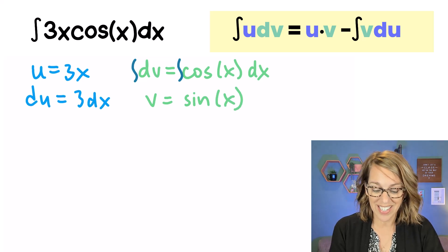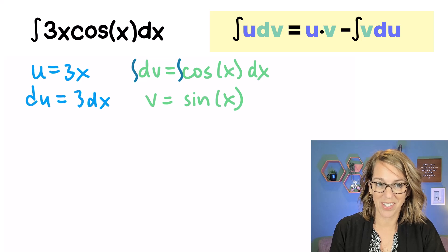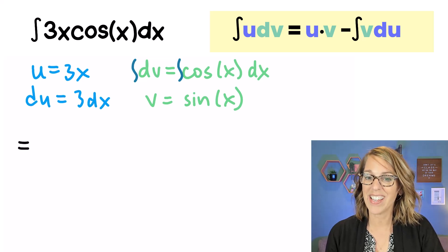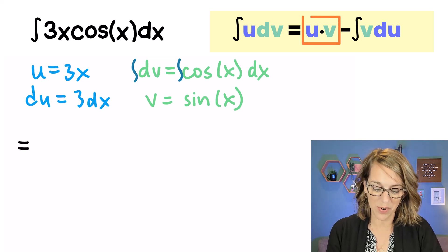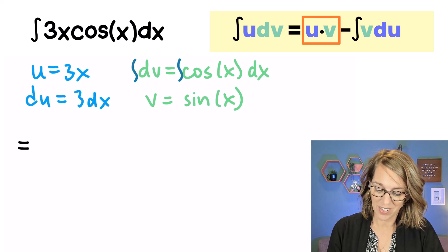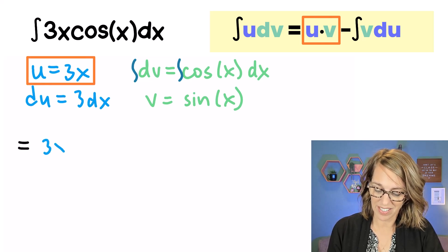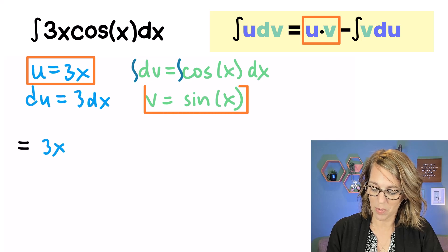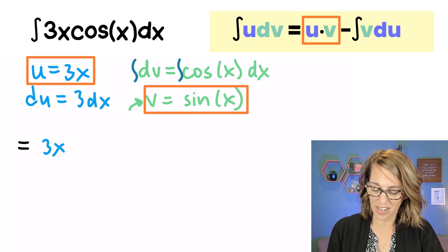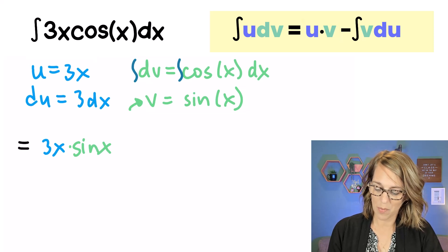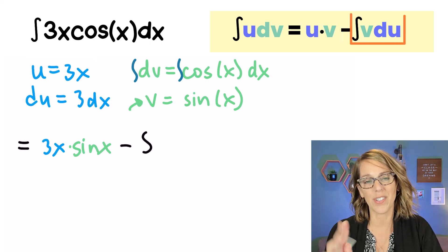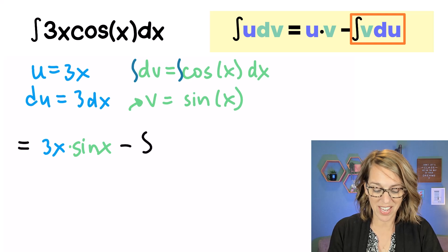Let's go ahead and put this into our formula. So as I'm applying the integral, I end up with u times v. So that's going to be 3x times v. That's what we just found is an antiderivative. So that's going to be times sine x. And then I want minus the integral. Now I'm switching them of vdu.